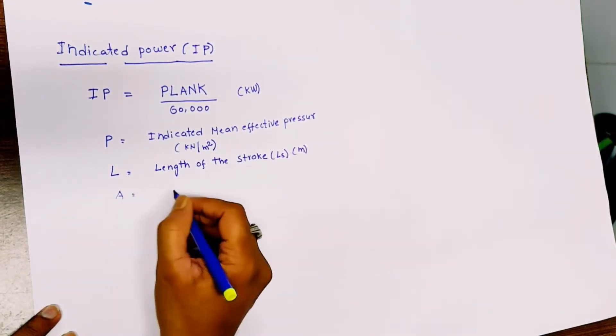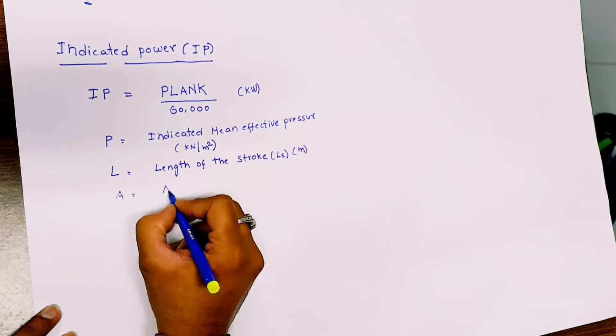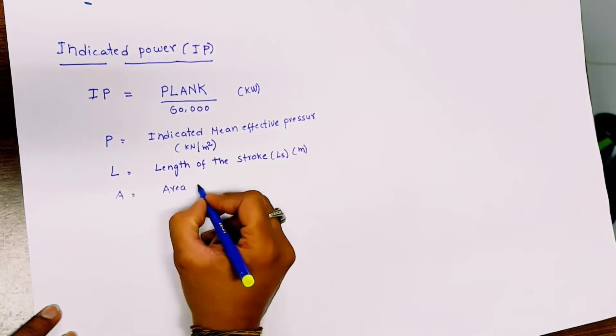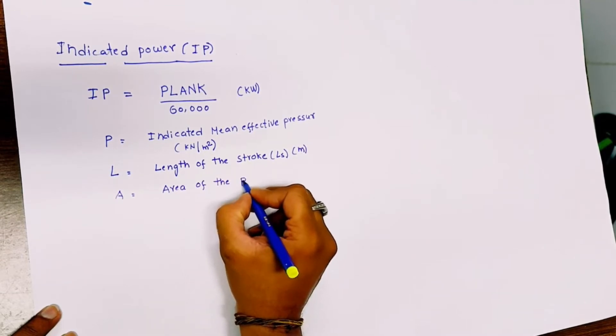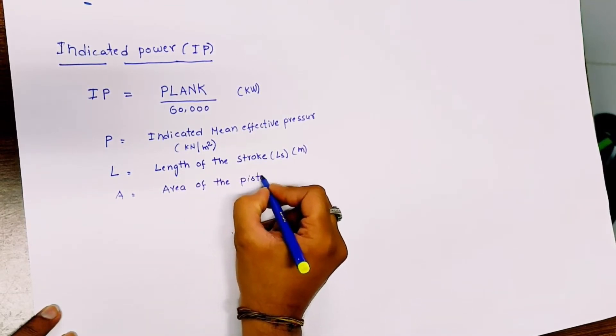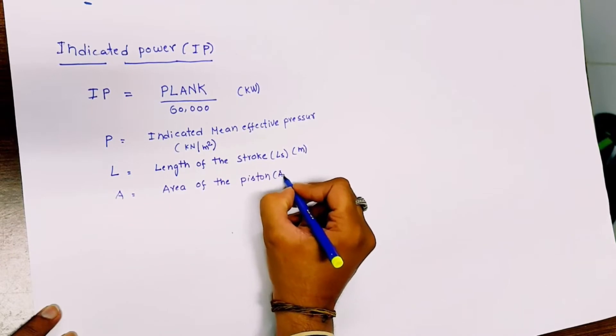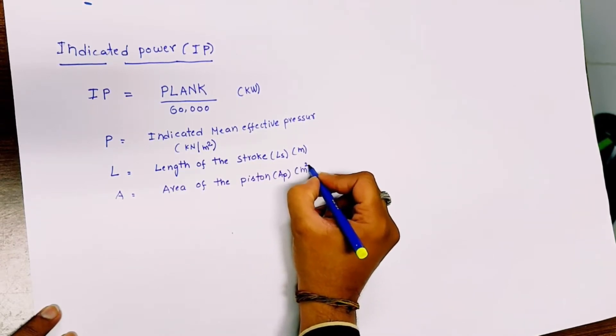A is nothing but the area of the piston. You can represent it by A_P, with units of meter squared.